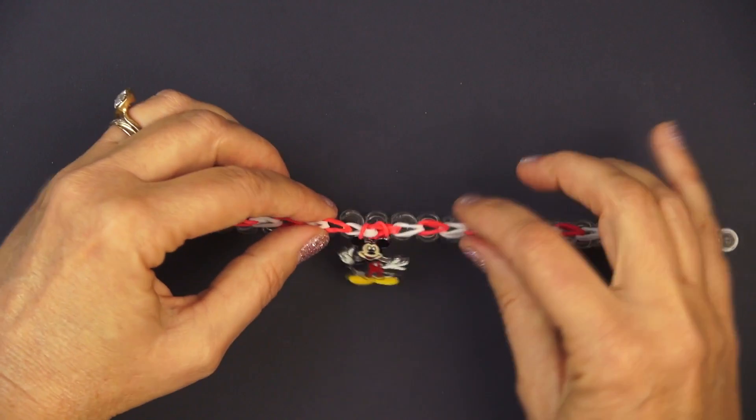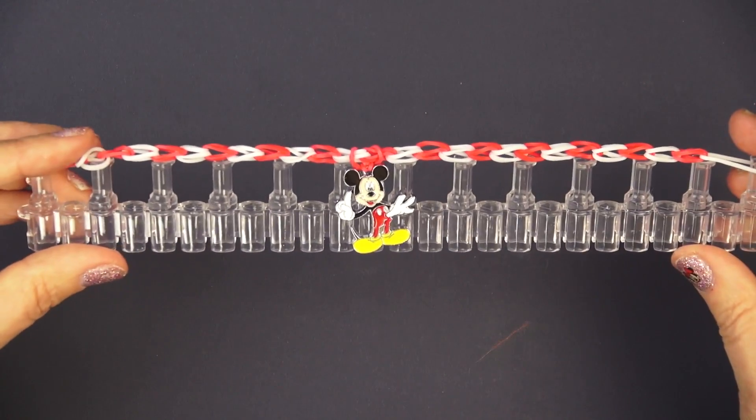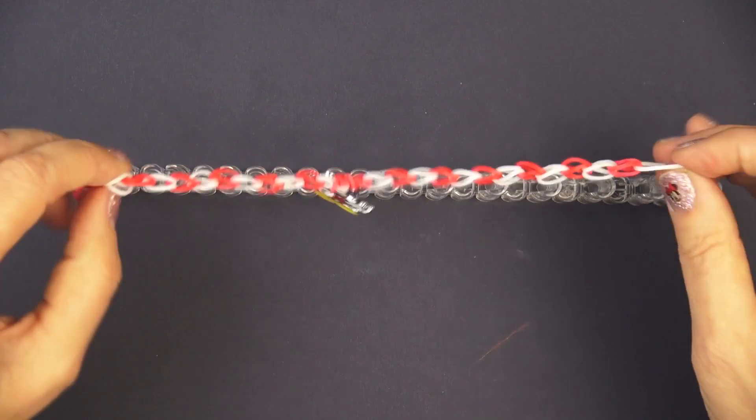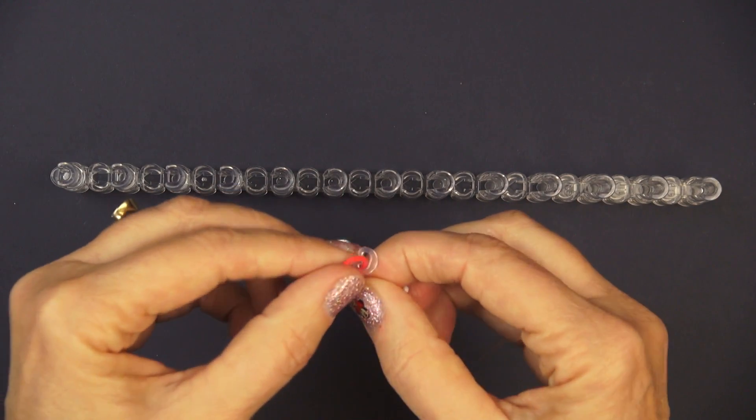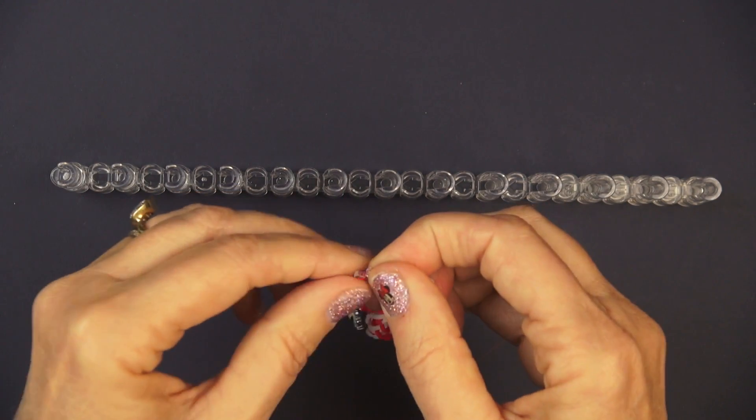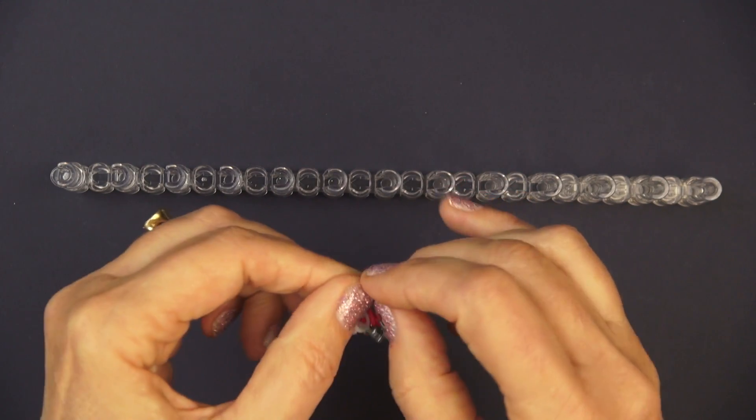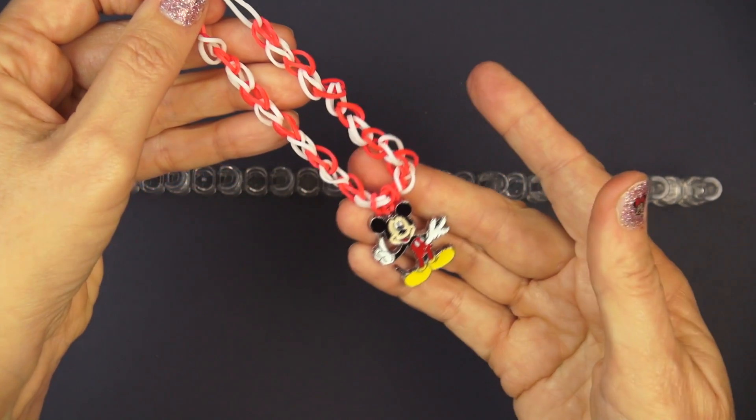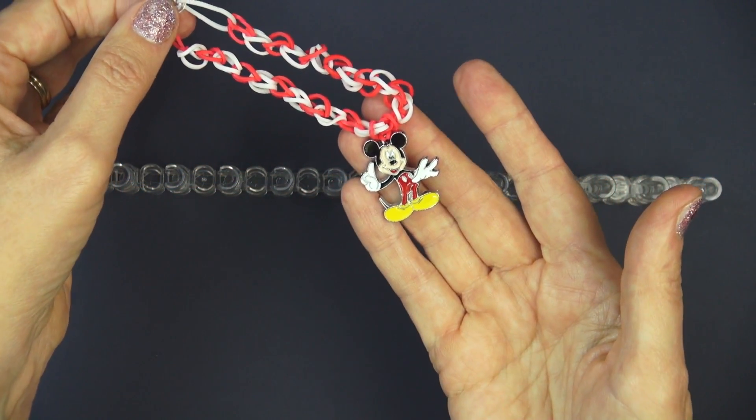There we go and now I have the bracelet and I have Mickey on there. And to put it on someone I just need to connect the two ends, use that c-clip that we have and put the other rubber band from the other end through it. And there we go, there's our really cute single loop Mickey Mouse bracelet.